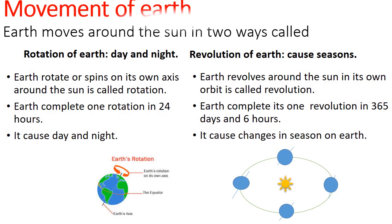Movement of Earth: Earth moves around the sun in two ways. One is rotation and second one is revolution.